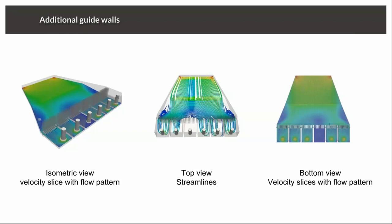There are other things that can be done to further enhance the flow characteristics. We can see certain flow circulation regions in some areas. By decreasing the wall angle that the guide wall makes with the horizontal and increasing the length of the four-bay, we can reduce those further. However, the result was satisfactory, so we went ahead with this design.